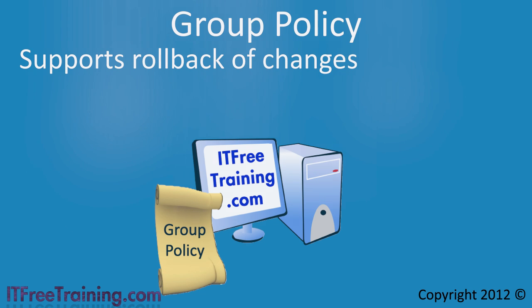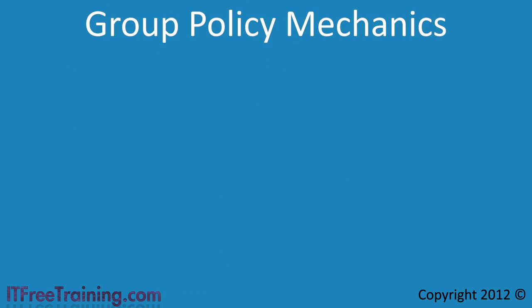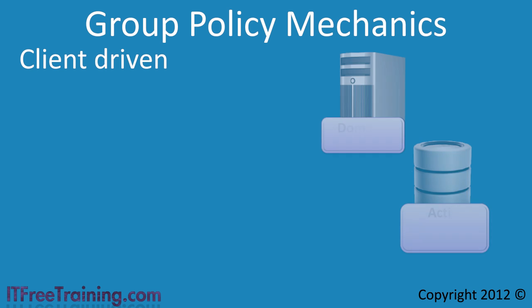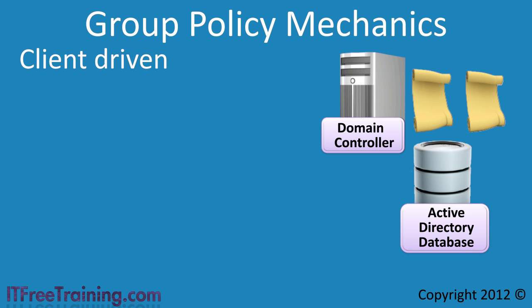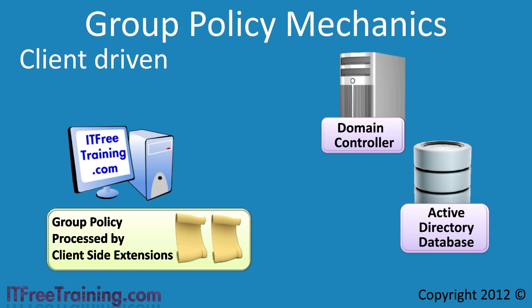Now that you understand the need for Group Policy, let's have a look at how the mechanics of Group Policy work. Understanding how Group Policy works will help you deploy and troubleshoot Group Policy better in your organization. Despite the fact that Group Policy can be used for centralized control of computers in your organization, it may surprise you to hear that it is in fact client driven. The Group Policy settings are first created and configured and then stored in Active Directory. Once the Group Policy is created, it can be downloaded by the client operating system. This is why Group Policy is client driven — it is up to the client to download the Group Policy from a domain controller. This is why non-Microsoft clients can be added to the domain that do not support Group Policy; they simply choose not to download Group Policy. A system like this is called a poll system, since the client requests the information rather than the server pushing the data out to the clients.